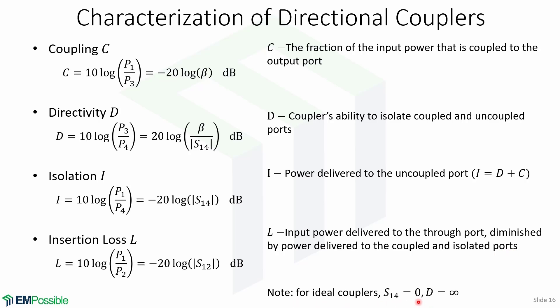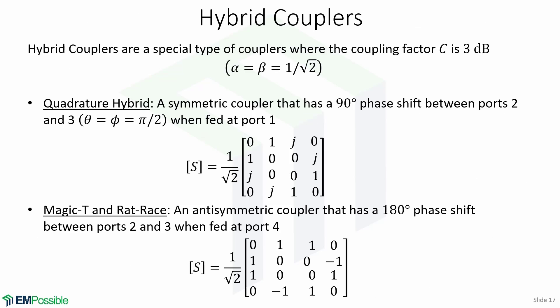For ideal couplers, S14 equals 0, and therefore the directivity is infinity. Finally, let's look at hybrid couplers. Hybrid couplers are a special type of coupler where the coupling factor C is 3 dB.